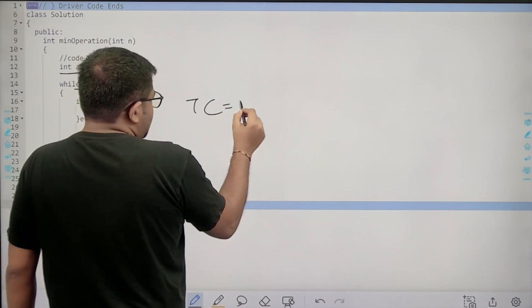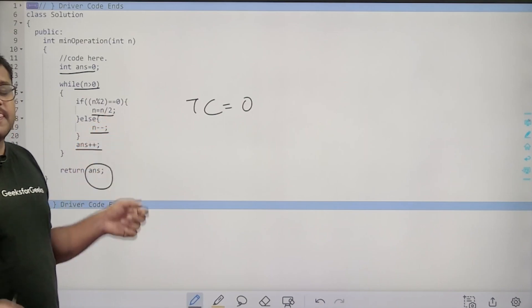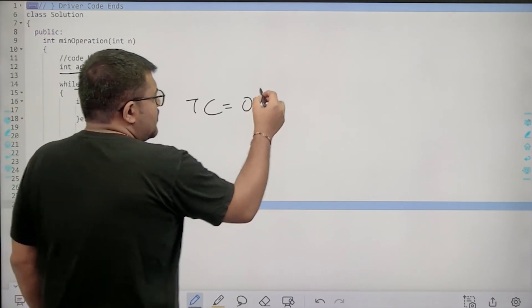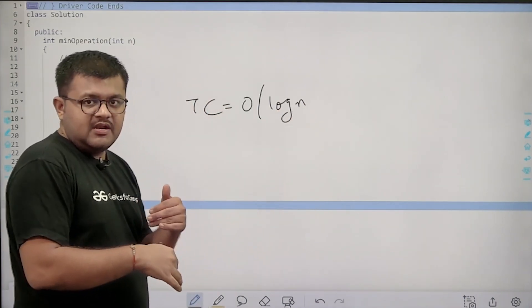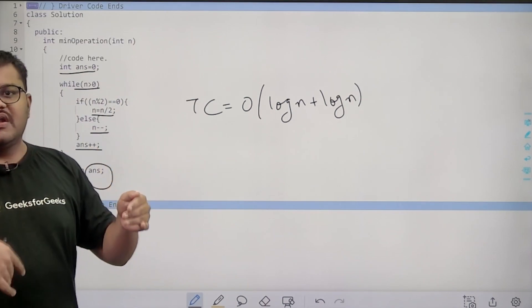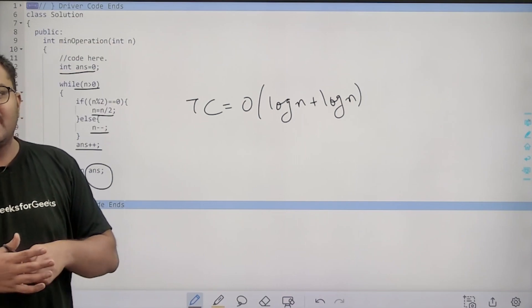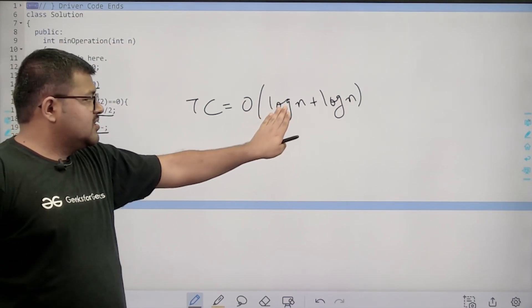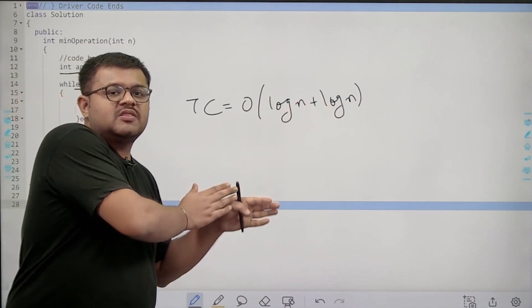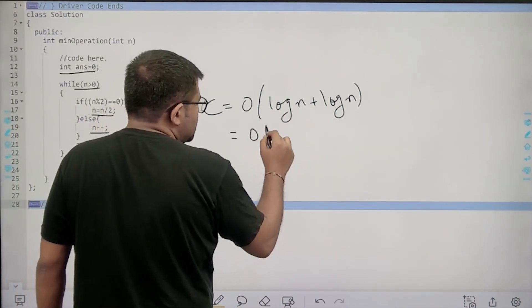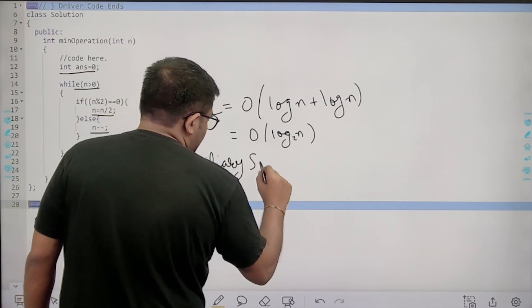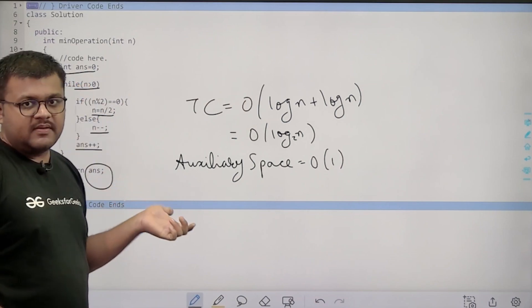For time complexity: whenever the number is even it is divided by 2; whenever odd, subtract 1 makes it even, then it's divided by 2 again. So there are at most O(log N) divide-by-2 operations and at most O(log N) subtract-1 operations — worst case is alternating subtract then divide, giving 2 log N steps, which is O(log N). Auxiliary space is O(1) since we use only one variable.